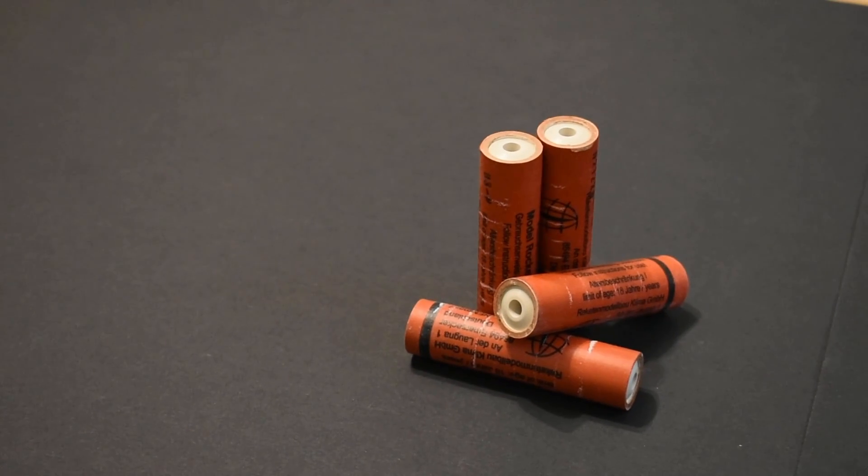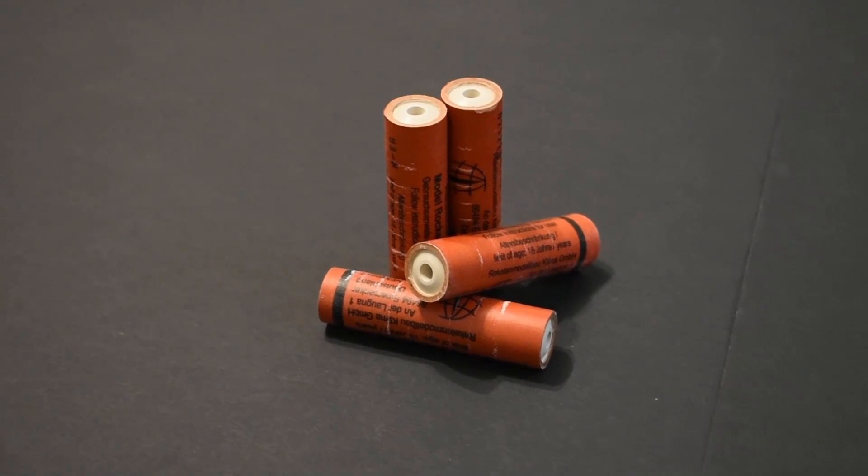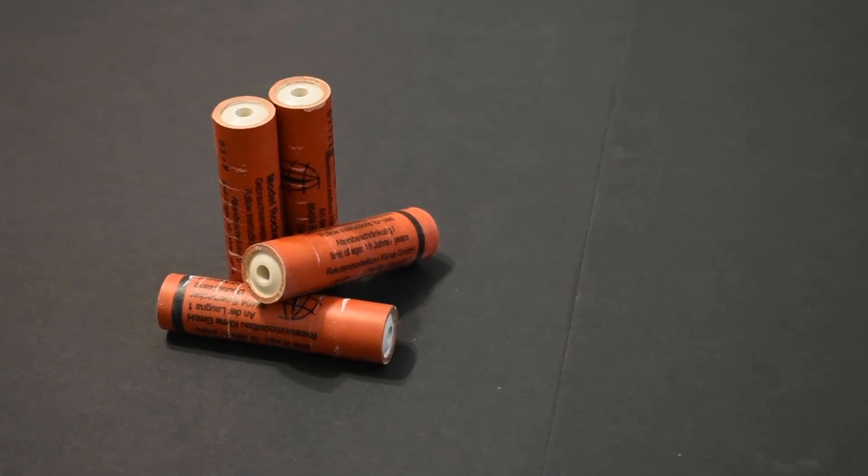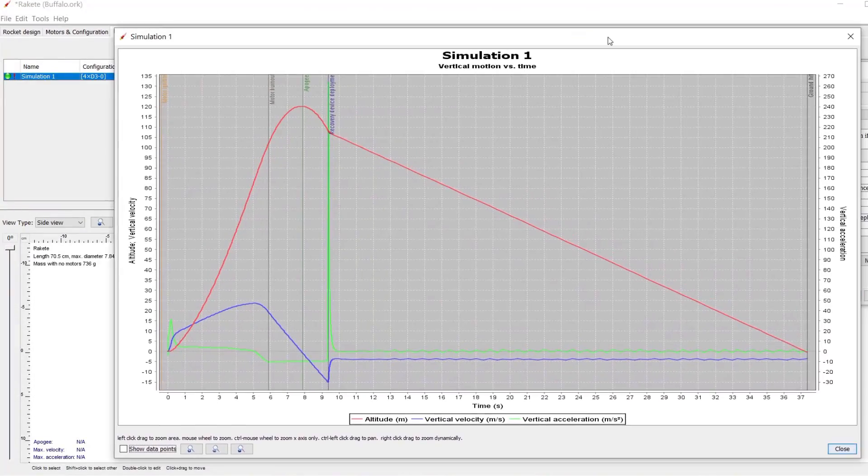Propulsion wise, Klima D3P motors were chosen. In a cluster of four they would have been strong enough to lift the rocket up to 120m.